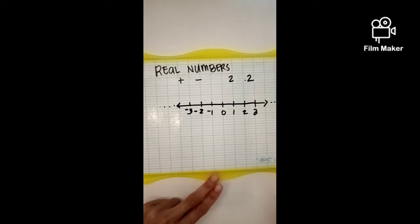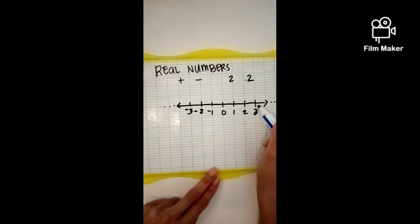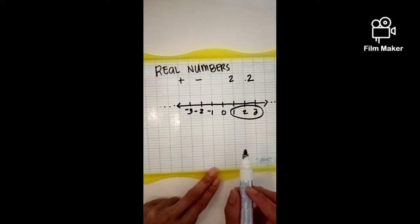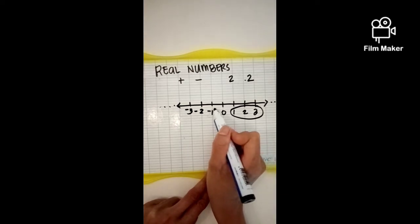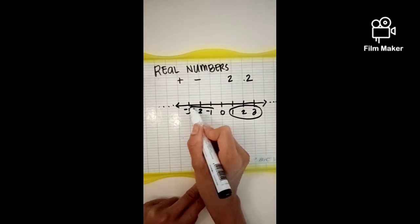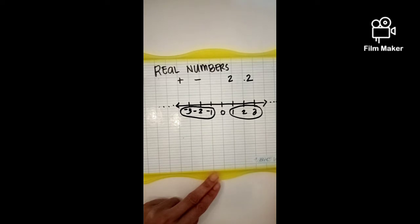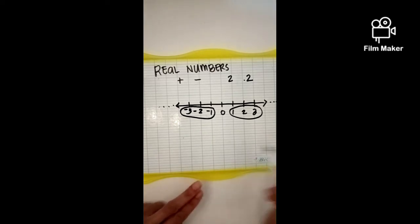All the numbers at the right side of zero, which are positive numbers, are considered as real numbers. And also, all the numbers at the left side of zero, which are negative numbers, are also considered as real numbers.